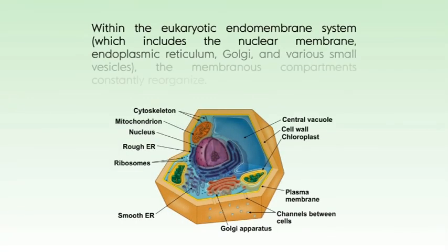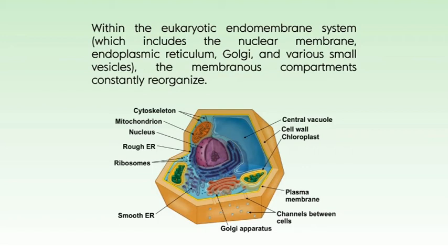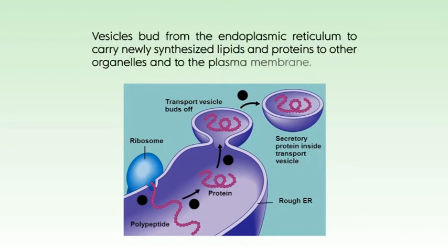Now let's look at membrane fusion. A remarkable feature of the biological membrane is its ability to undergo fusion with another membrane without losing its continuity. Within the eukaryotic endomembrane system — which includes the nuclear membrane, the endoplasmic reticulum, the Golgi and various small vesicles — the membranous compartments constantly reorganize. Vesicles bud from the endoplasmic reticulum to carry newly synthesized lipids and proteins to other organelles and to the plasma membrane. Exocytosis, endocytosis, cell division, fusion of egg and sperm cells, and entry of a membrane-enveloped virus into its host cell all involve membrane reorganization in which the fundamental operation is fusion of two membrane segments without loss of continuity.